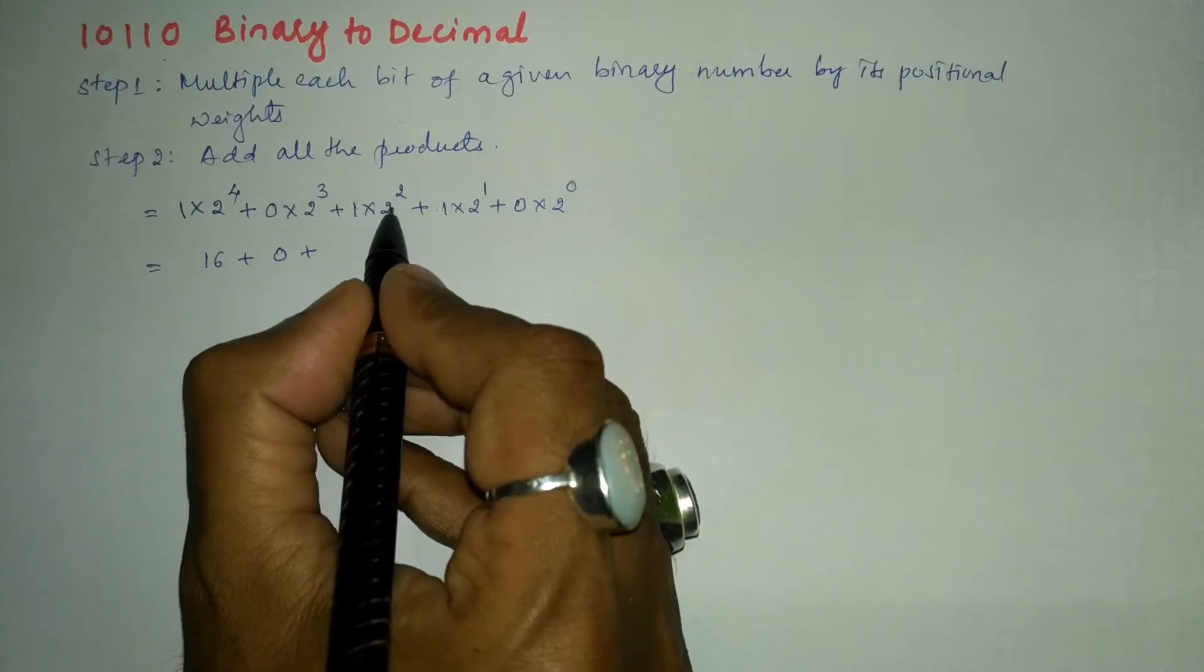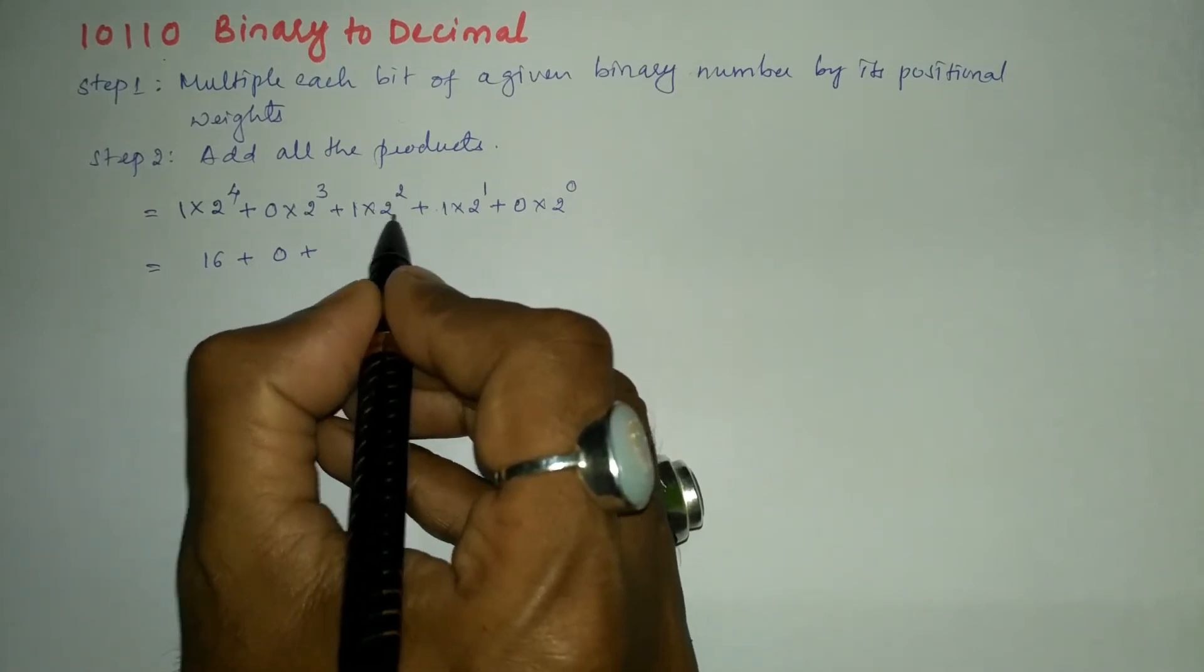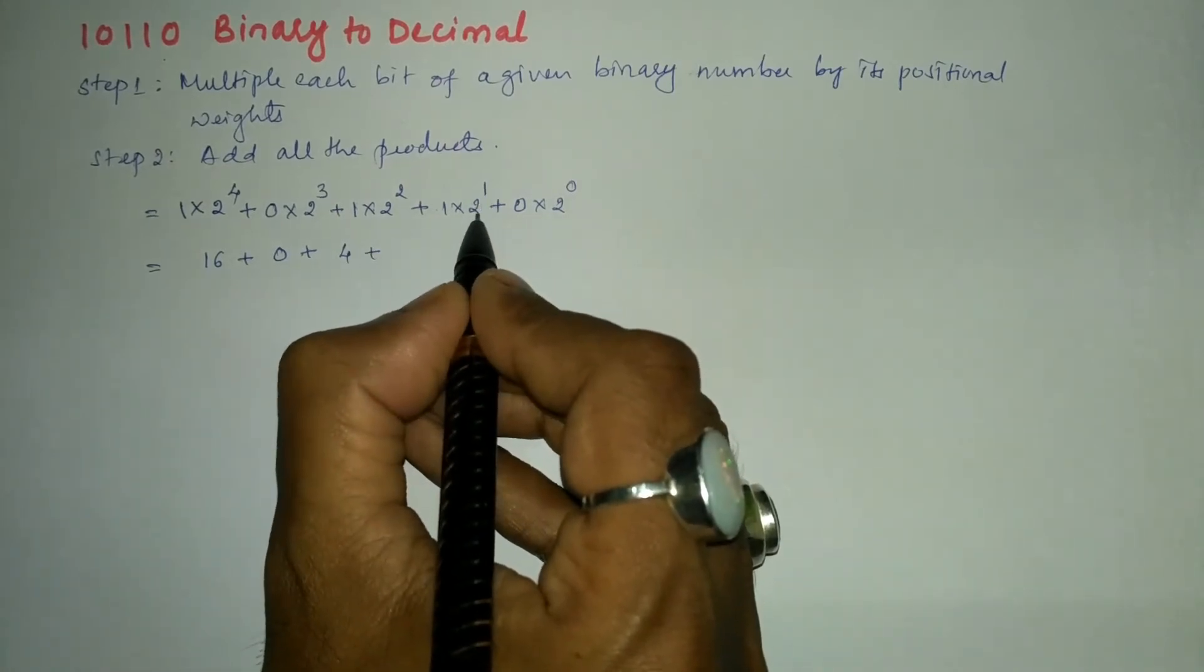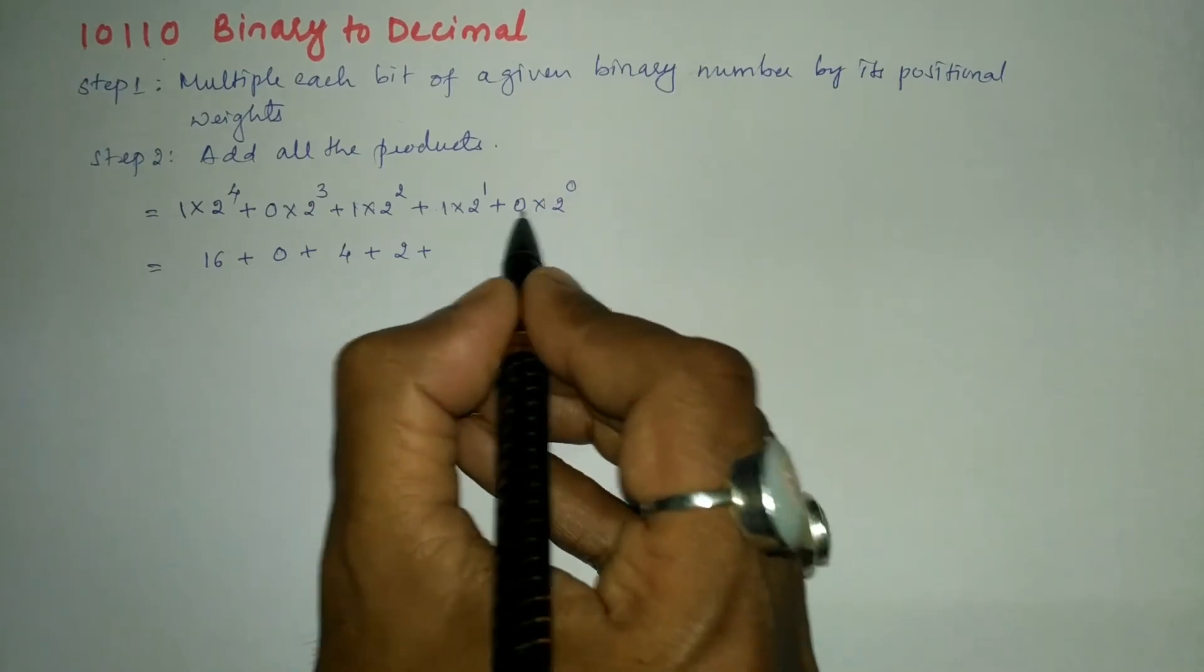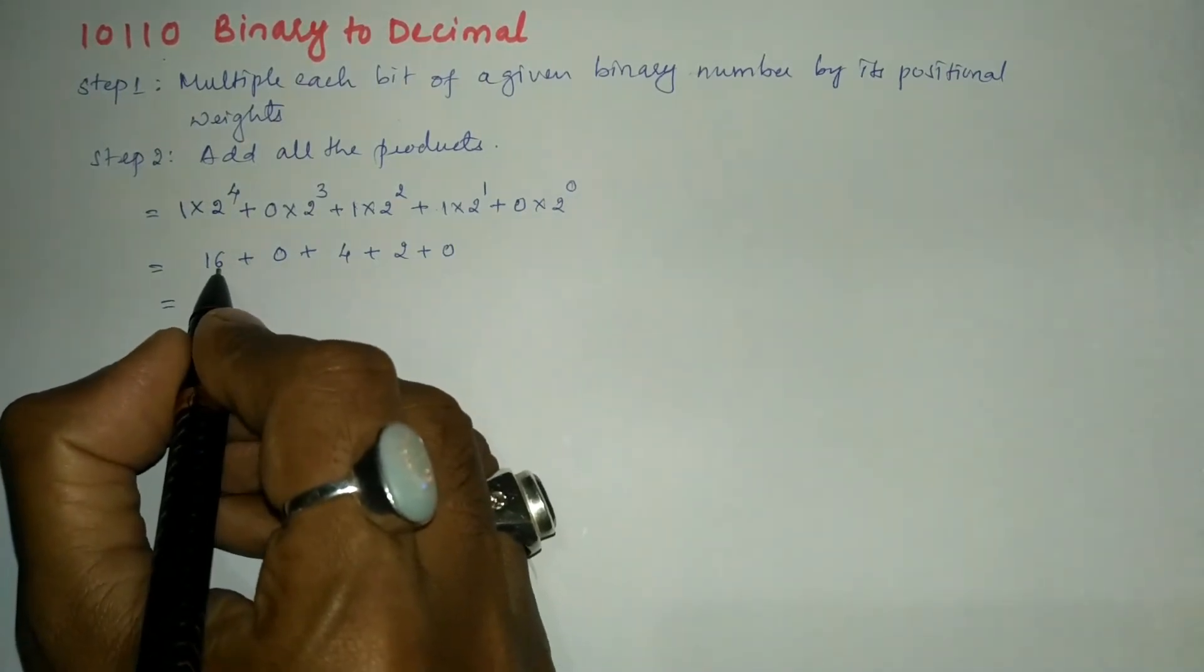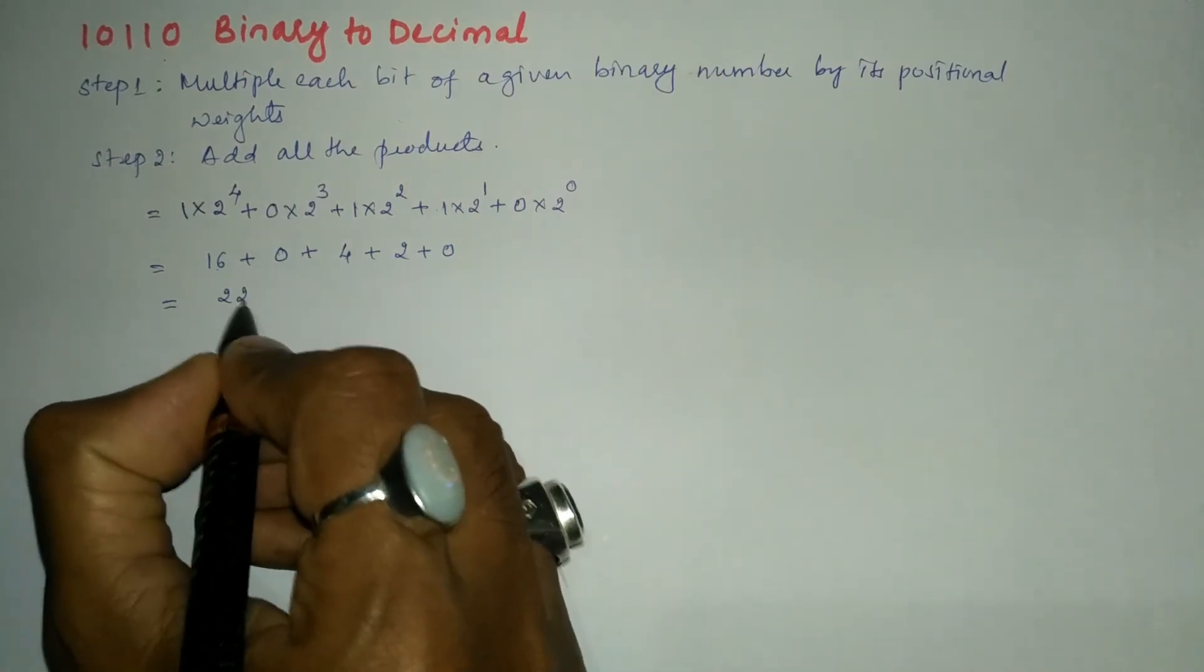...as it is 2 to the power 2 means 2 is to be multiplied twice: 2 to the 4, 4×1 = 4. Plus 2 to the power 1 is 2: 2×1 = 2. Plus 0 into anything is 0. Now let us further simplify: 16 plus 4 is 20, 20 plus 2 is 22. Here we can...